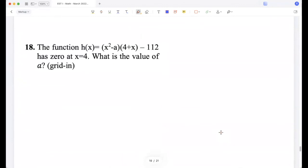The function h(x) has zero at x equal to 4. What is the value of a? Okay, so 0 is 16 - a(8 - 1, 1, 2). So 1, 1, 2 is 16 - a(8). So 16 - 8a. So a is 2.